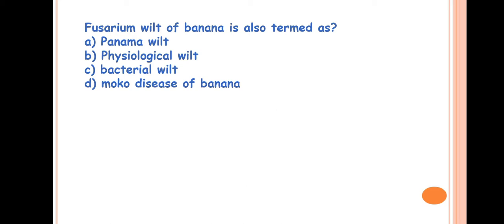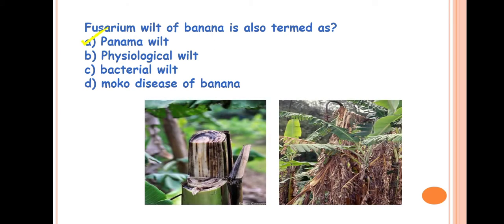The next question is, Fusarium wilt of banana is also termed as? The answer is A, Panama wilt. This is a soil-borne disease caused by a fungus, Fusarium oxysporum f. sp. cubense. It was first diagnosed in Panama region. That's why this disease is called Panama wilt.